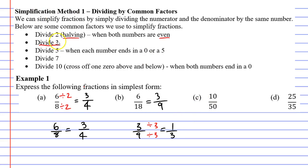Let's now move on to question C. We have the fraction 10 over 50. You'll notice that both numbers end in a 0. And here it says that if both numbers end in a 0, we can divide by 10. Let's try that. 10 divided 10, and 50 divided 10. What do we get?